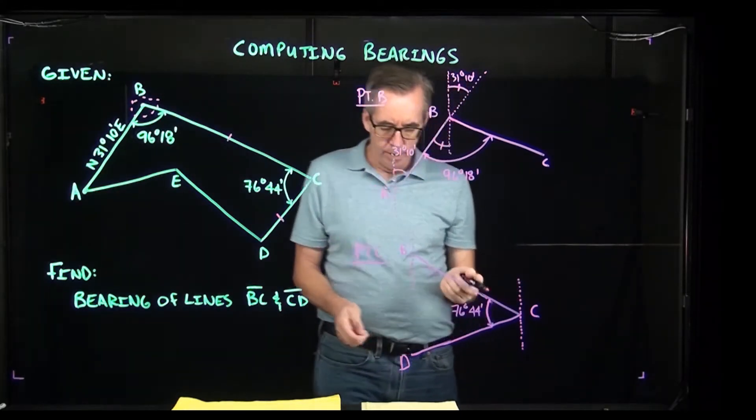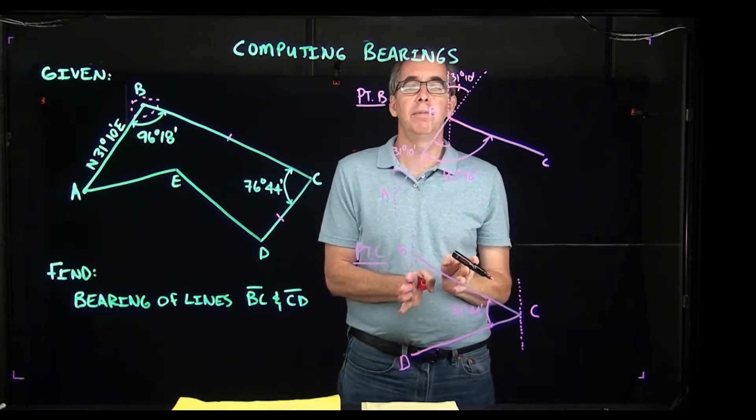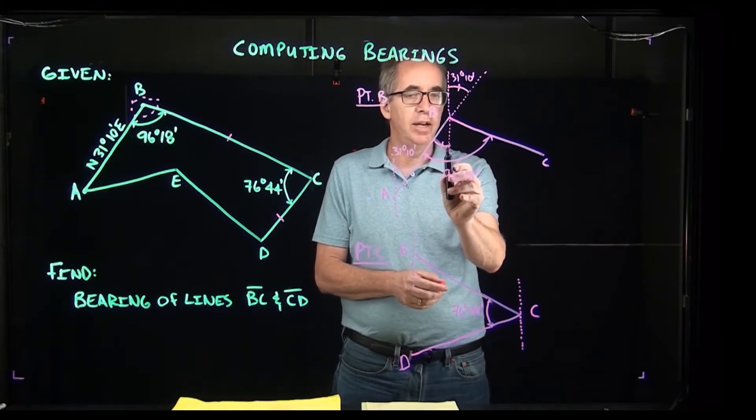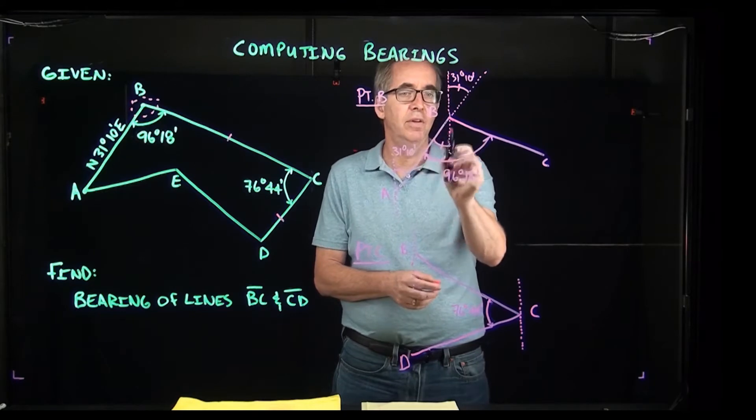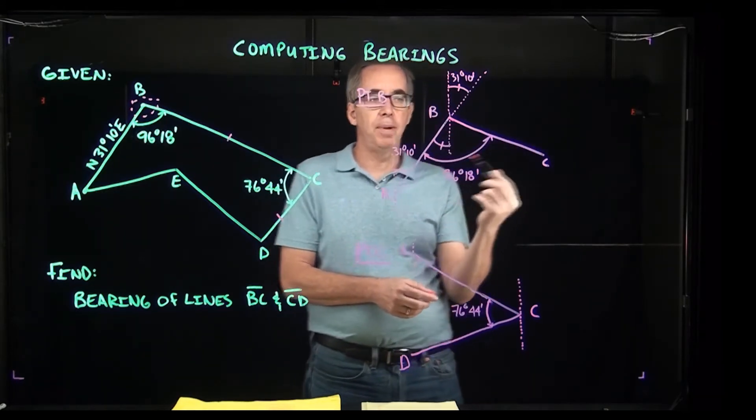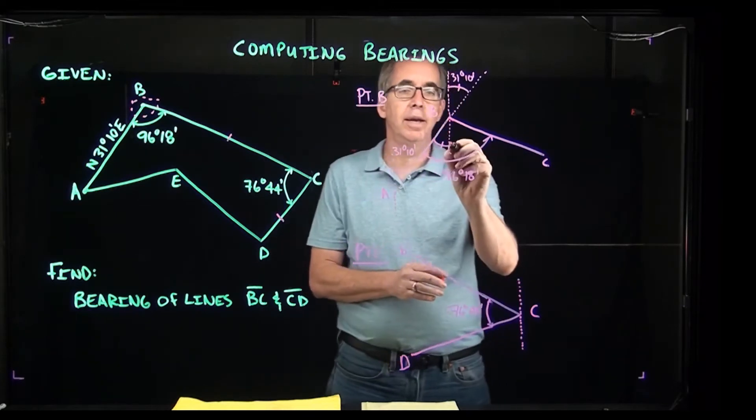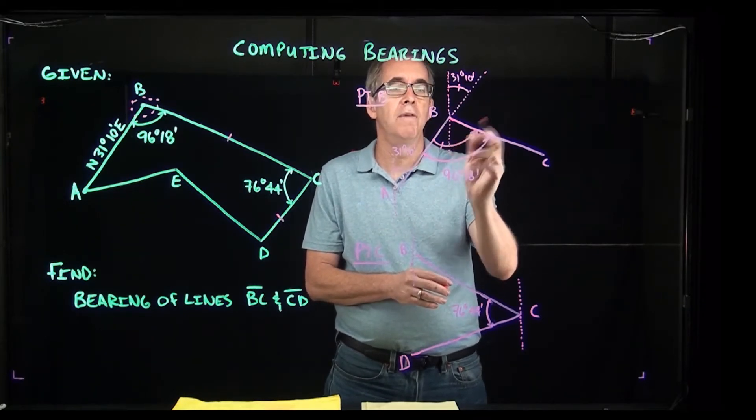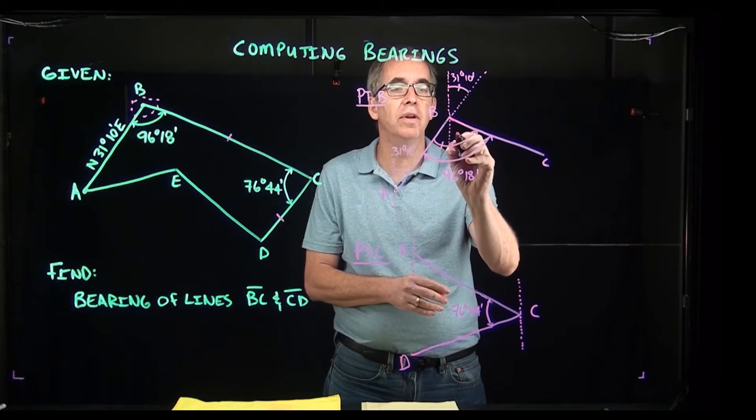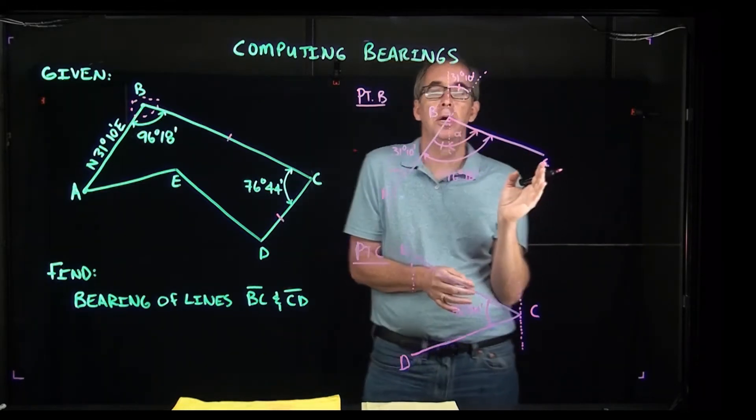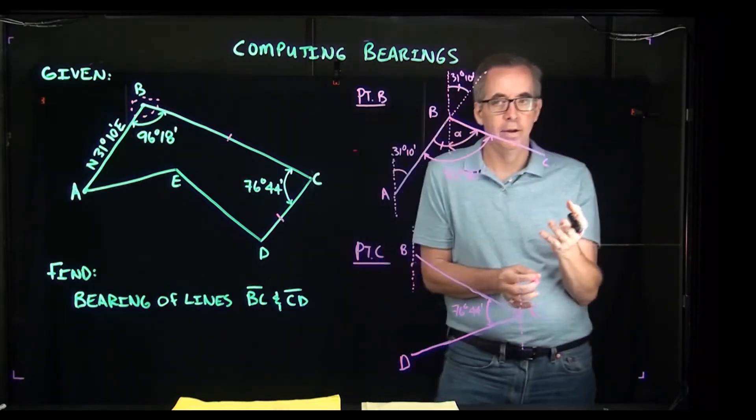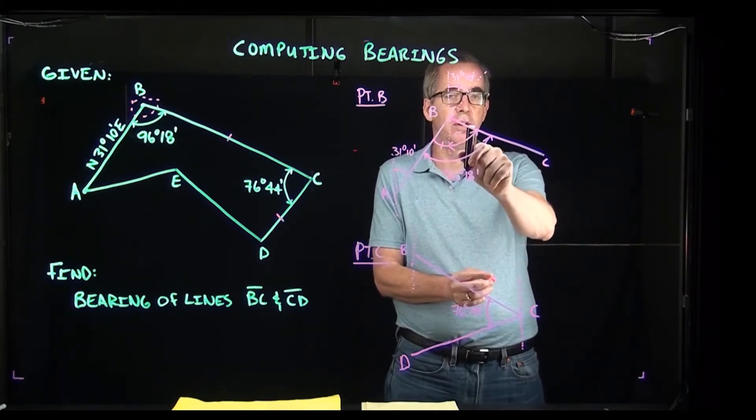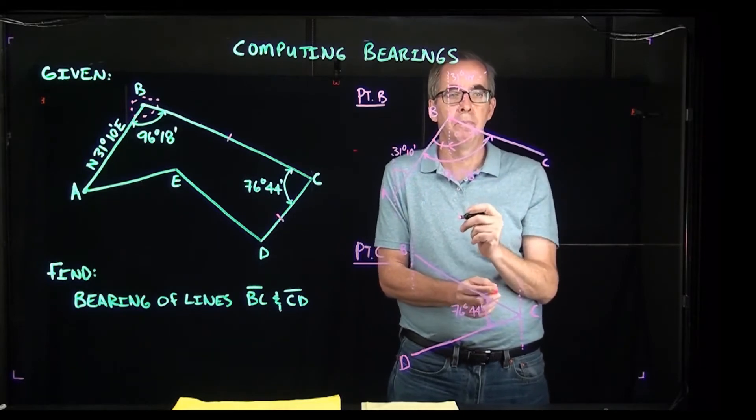That's a good start. Now for us to have the bearing of BC, remember bearing starts from either the north or the south and then you go either 90 degrees to the west or east depending on which quadrant you're in. This bearing, looking at the drawing here, is basically going to be south so many degrees east. For lack of better term, I'm just going to call this number here, this angle, alpha. So once we can calculate alpha, say alpha was 40 degrees, then we would say the bearing for BC is south 40 degrees east.